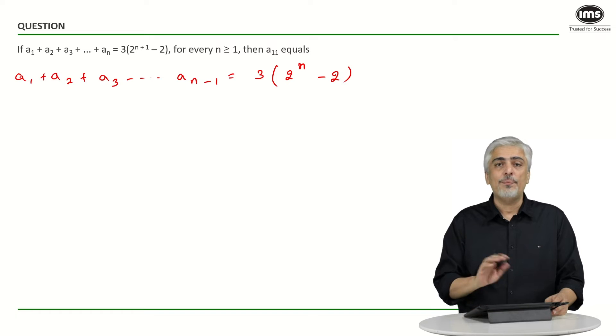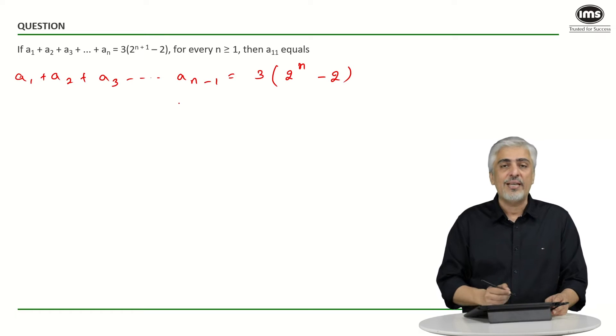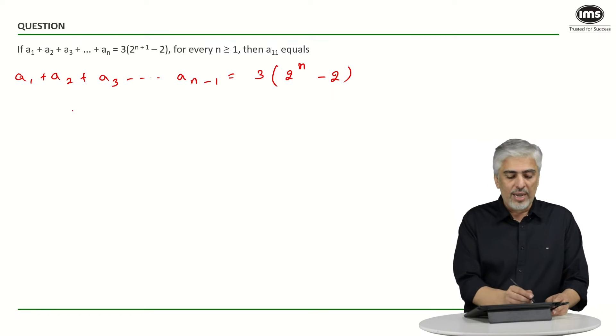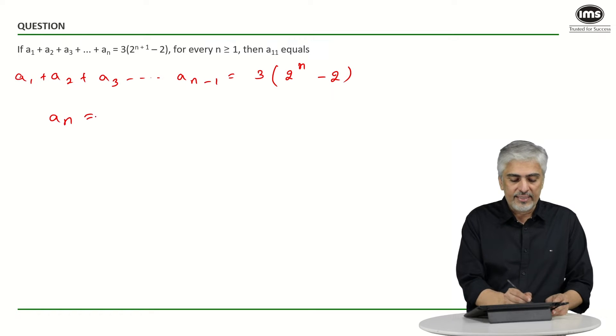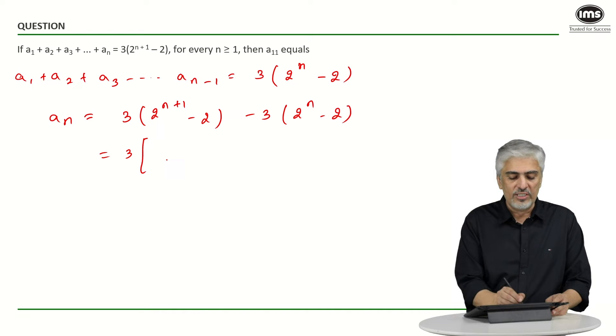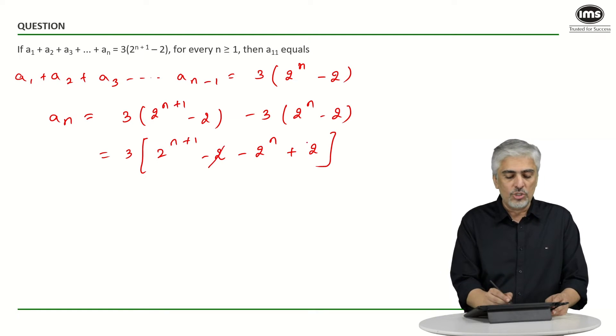And now if I subtract both these statements, that means the first statement minus the second statement, what will I get? a₁ will cut out, a₂ will cut out, everything will cut out except aₙ. So I will be left with aₙ is equal to 3 into 2^(n+1) - 2 minus 3 into 2^n - 2. Take 3 common, you will be left with 2^(n+1) minus 2 plus 2 cuts out.